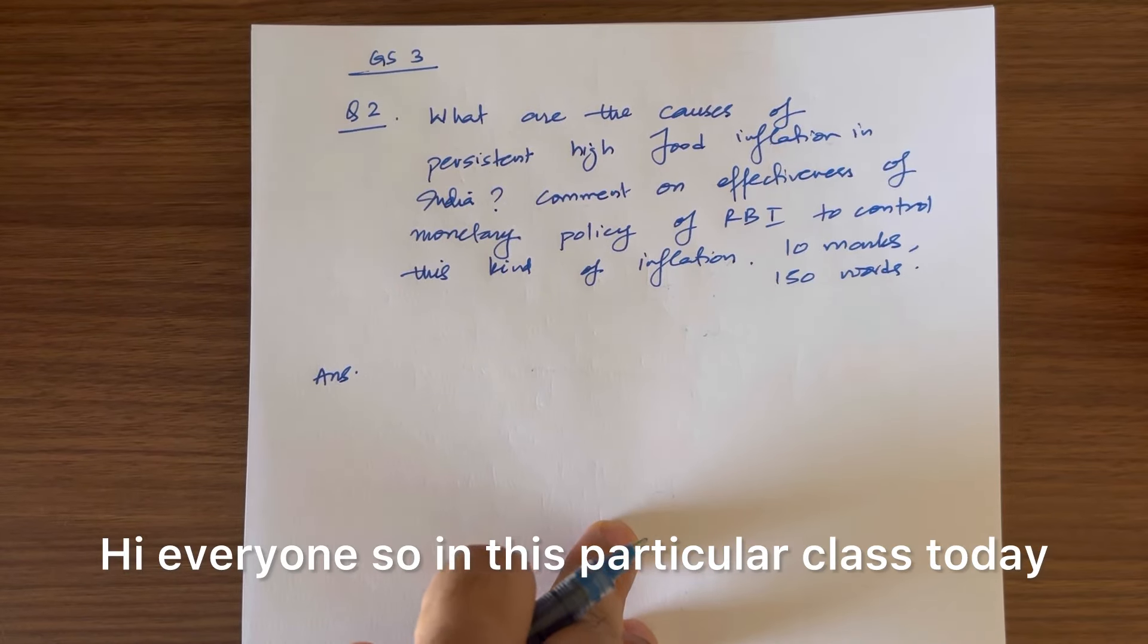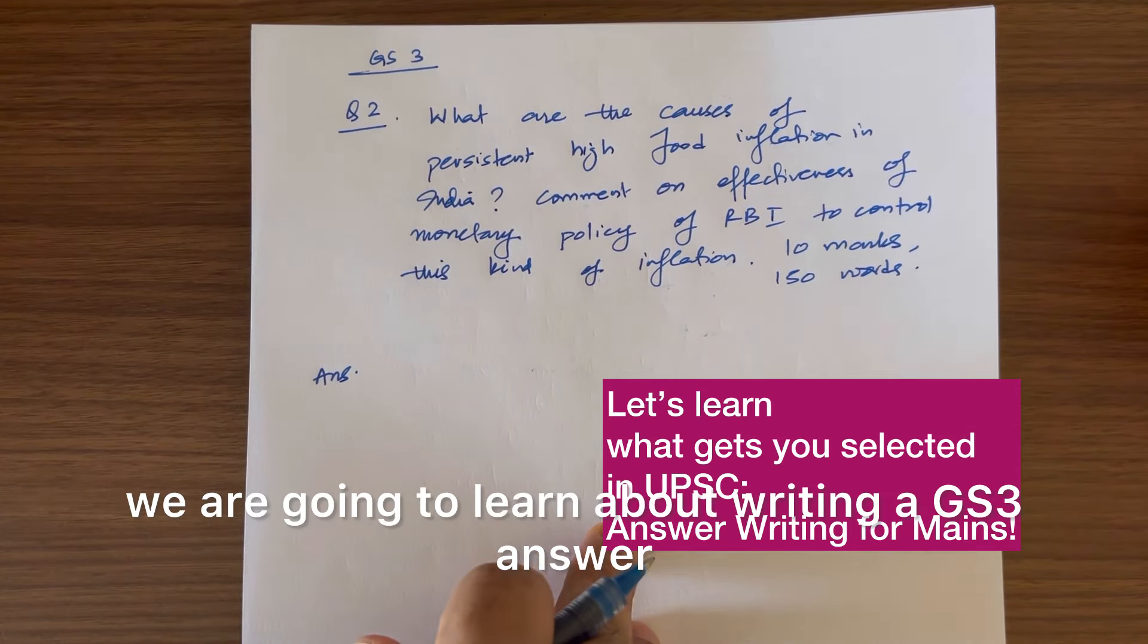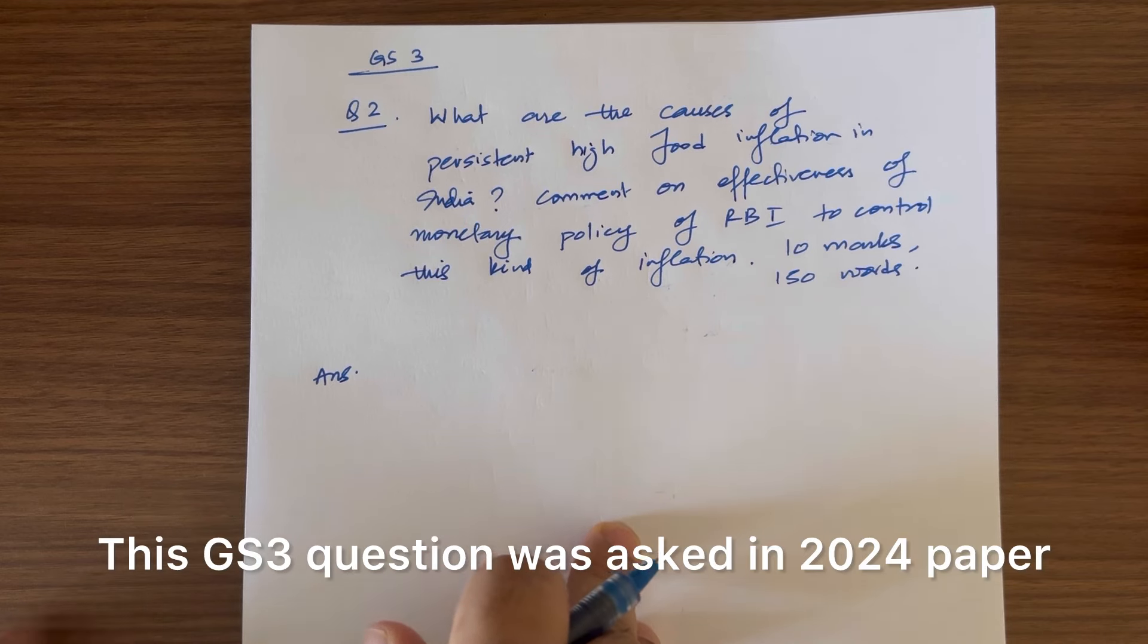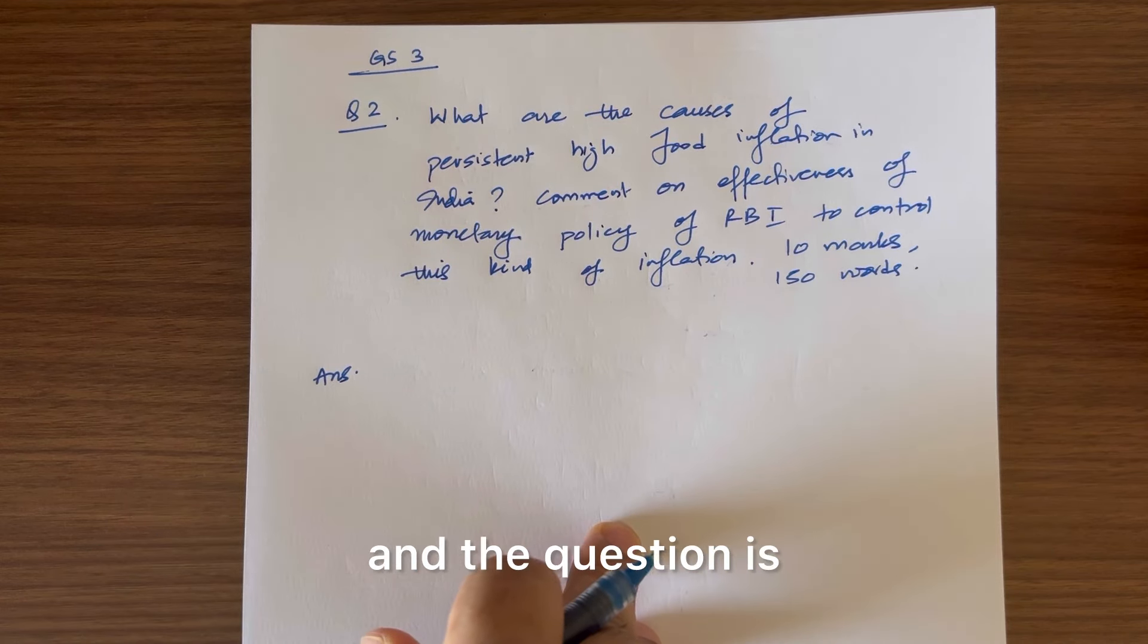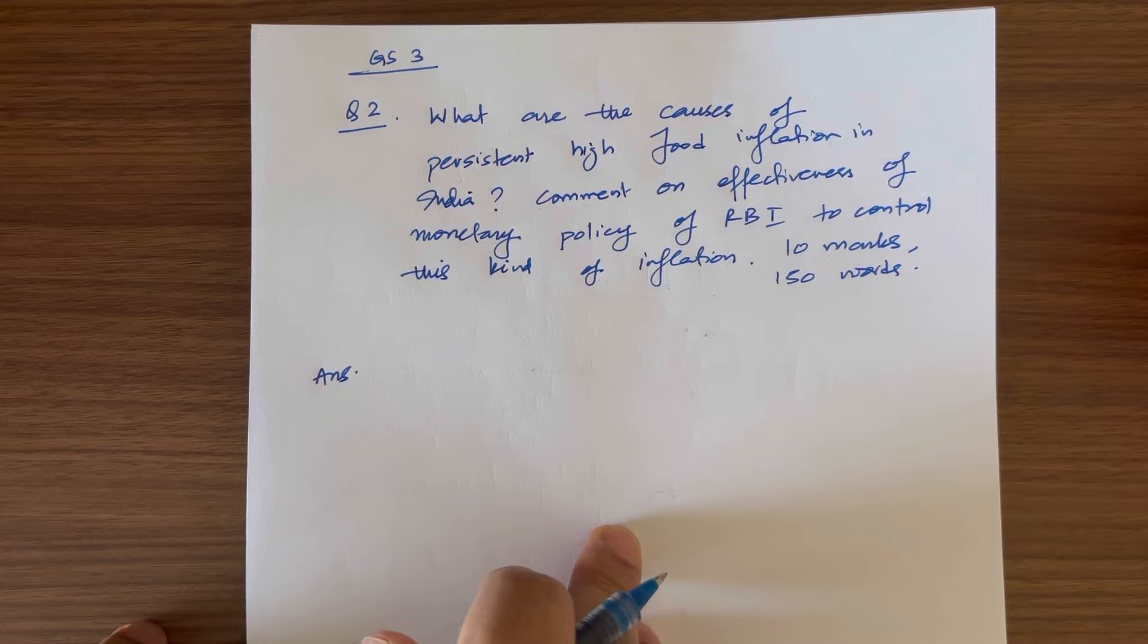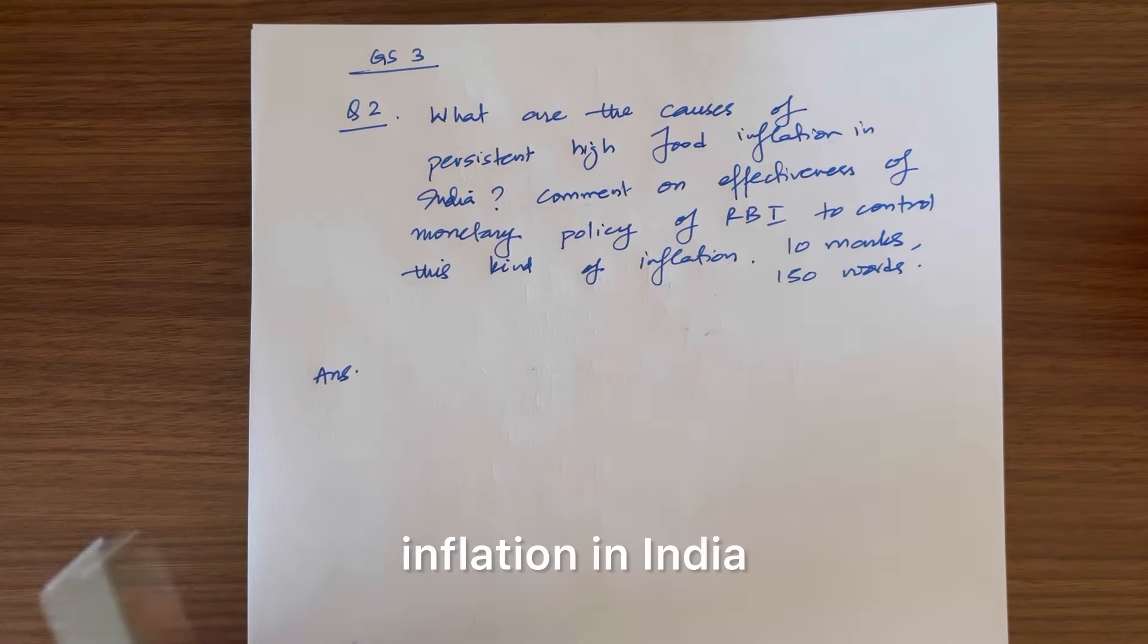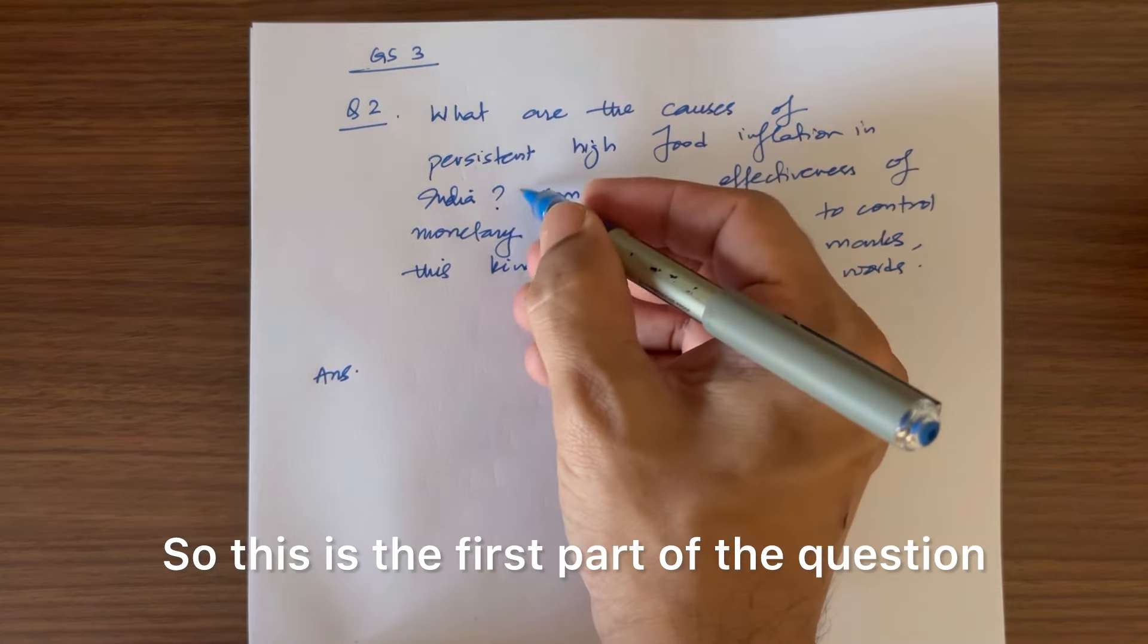Hi everyone, in this particular class today, we are going to learn about writing a GS3 answer. This GS3 answer question was asked in the 2024 paper and the question is: what are the causes of persistent high food inflation in India? This is the first part of the question.